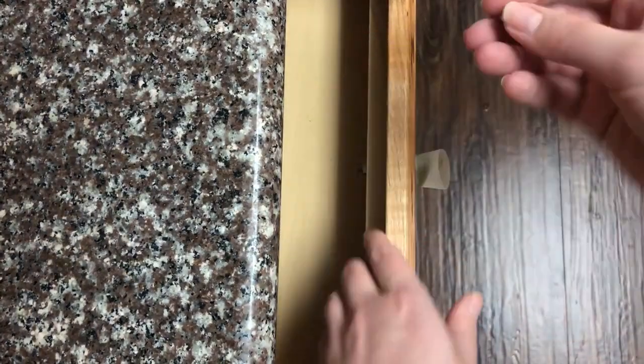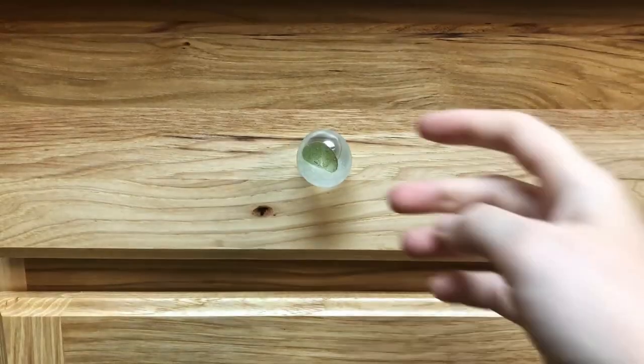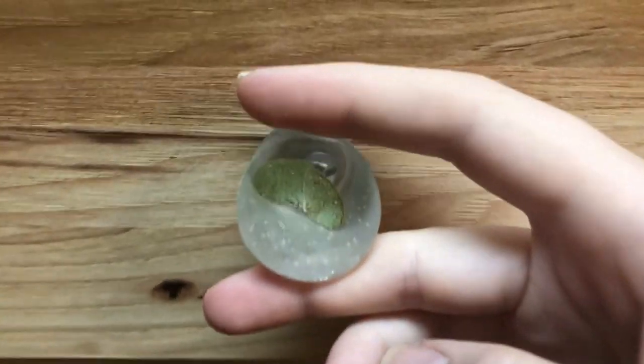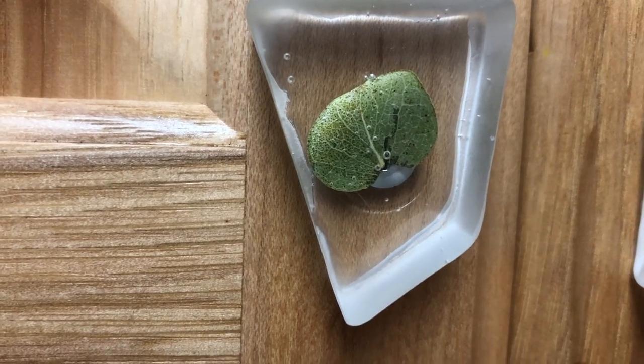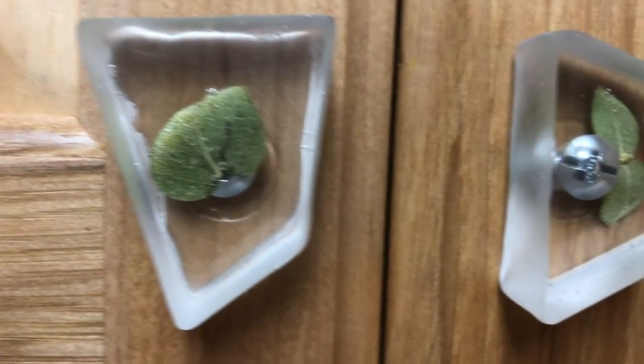I'm pretty happy with the results overall. But in the next batch, I will add more leaves and cure the resin in multiple layers to make sure that the leaves and pigment don't mix, and to make sure that the leaves don't float up past the hardware.